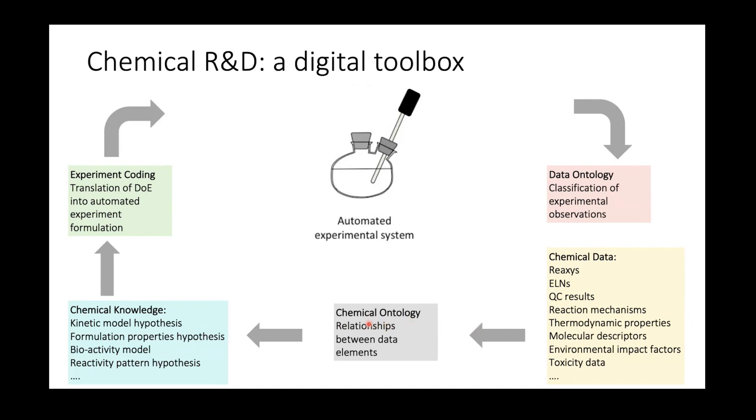All of this is chemical data which needs to be labeled, which needs to be understood what it is, where is it sitting, how reliable is this data, how old is this data, and how to use it. In order to be able to do that, we have to develop chemical ontologies, which is an explicit description of the relationships between various data elements. Only then we could have algorithmic tools which actually deal with chemical knowledge. The knowledge is our hypothesis - what is the reaction mechanism, how to predict properties of formulations, the hypothesis about various bioactivity models.